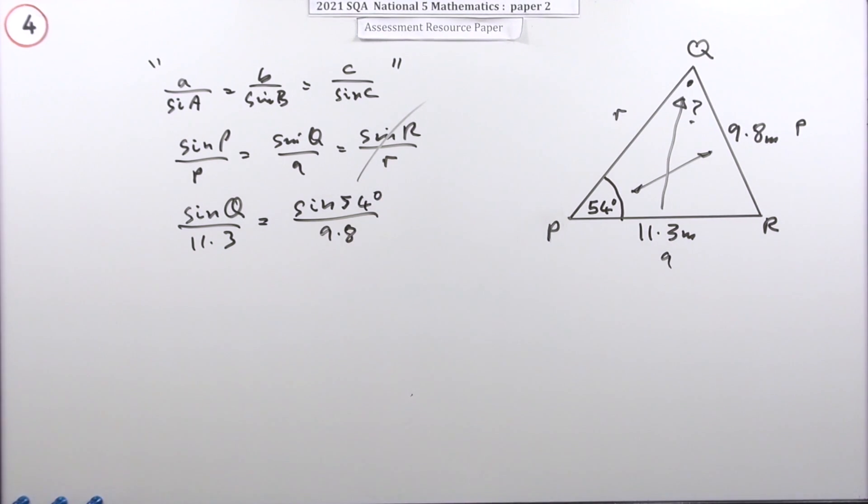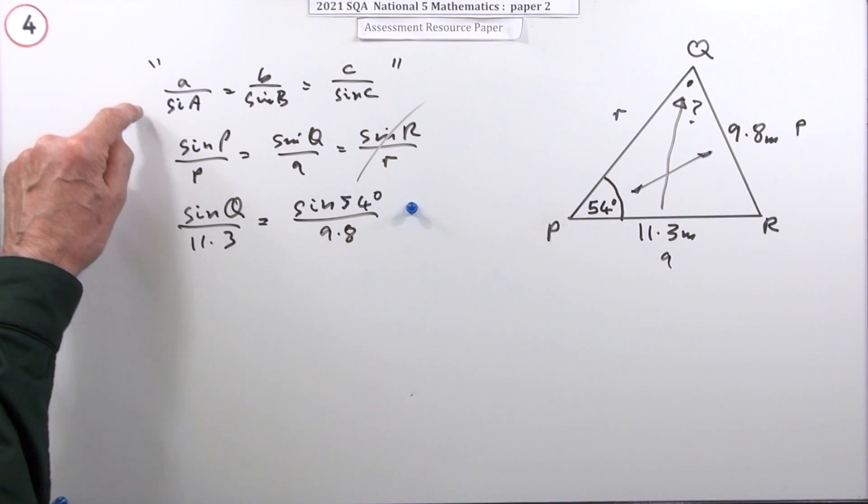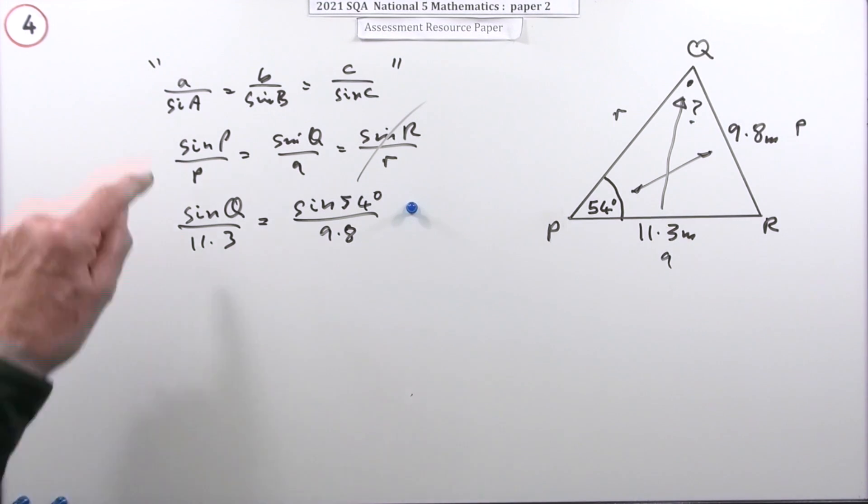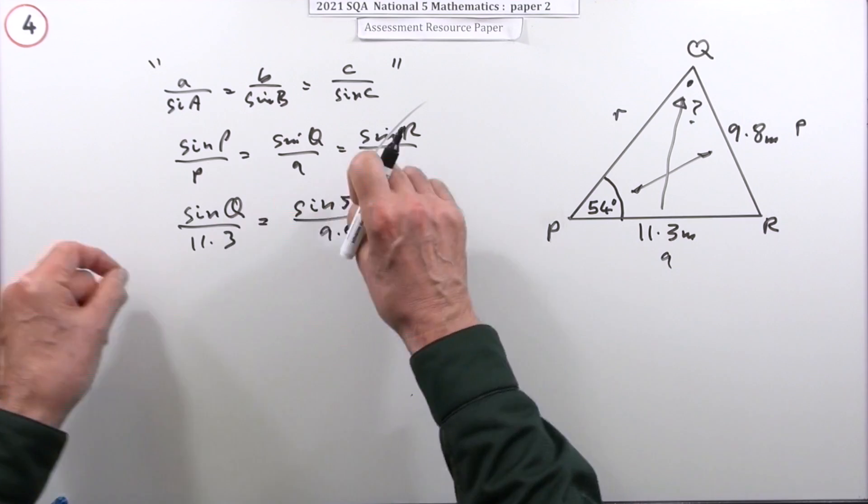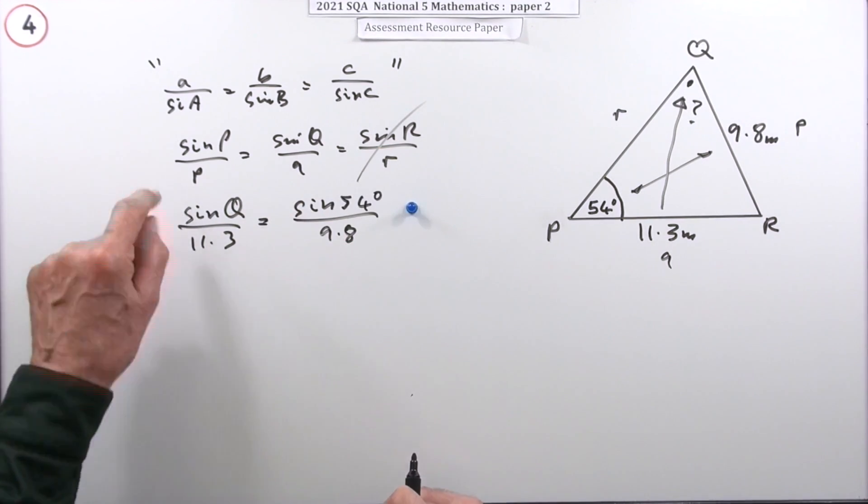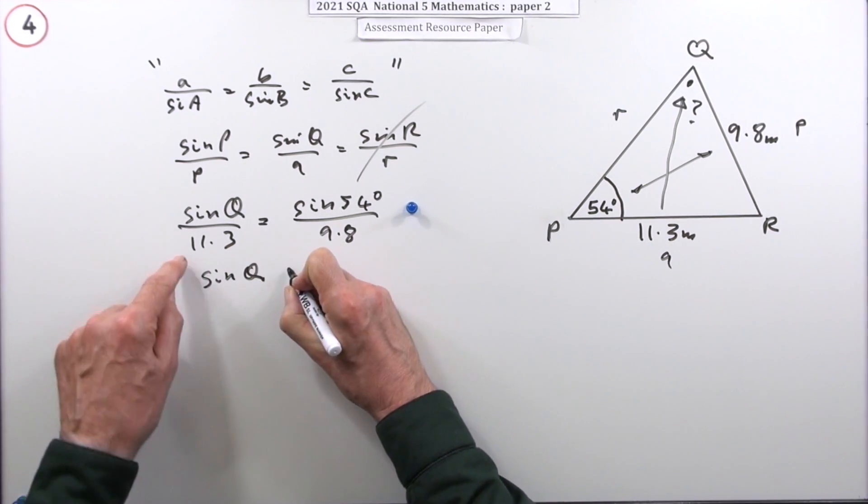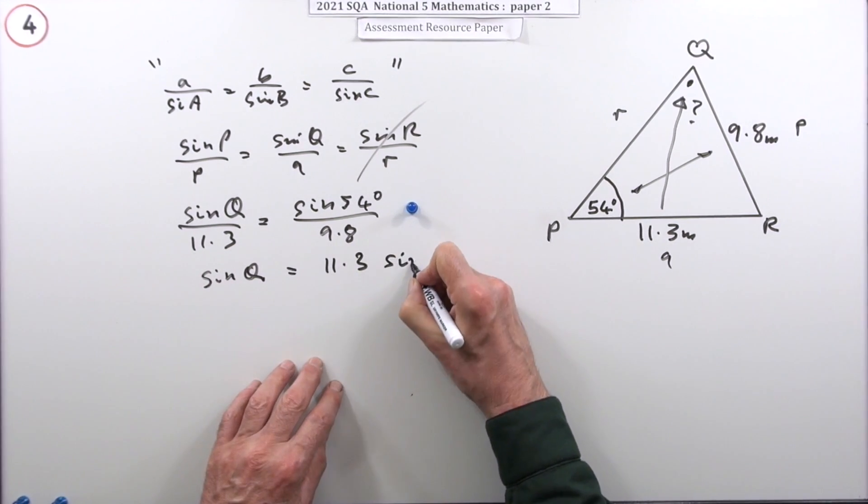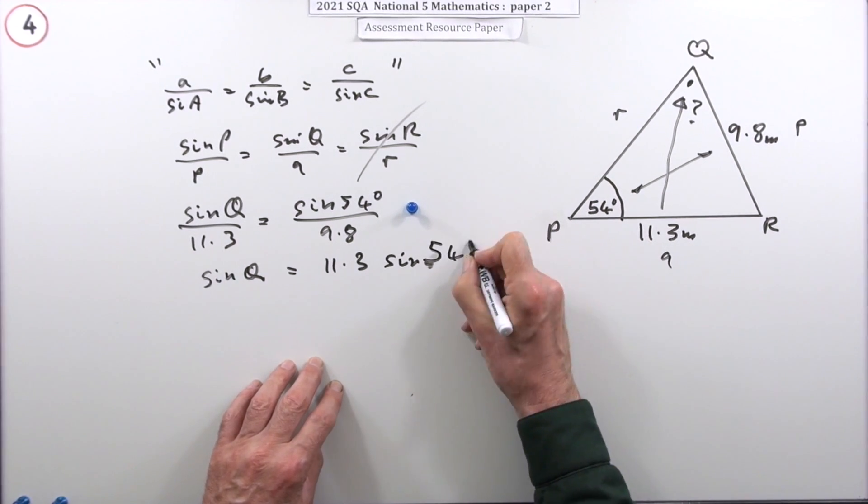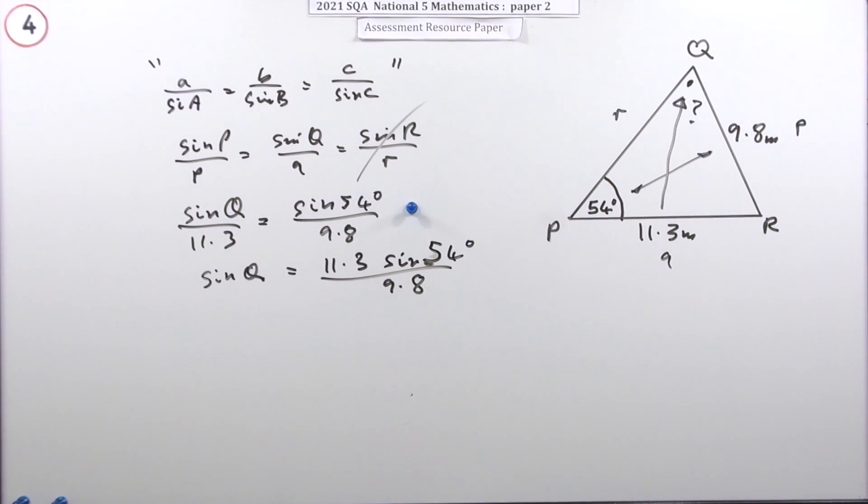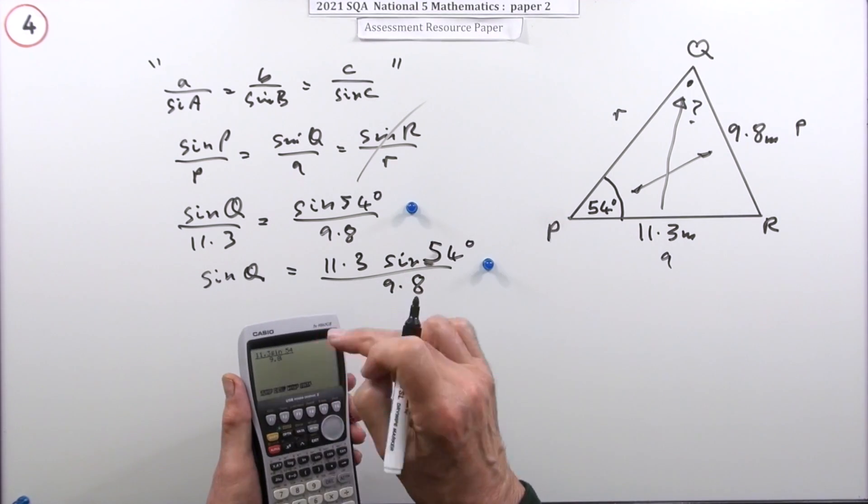Now, doing that gets the first mark. Or you may have had that the other way around, because you wanted to stick to the original form of side over the sine of the angle. But they're both the same as each other. Use the appropriate one. It saves a little bit of algebraic shuffling about to rearrange it. All I've got to do is take that 11.3 across and multiply. 11.3 sine 54 over 9.8. In fact, rearranging it gets you a mark.